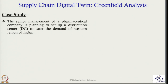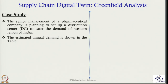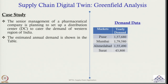The senior management of a pharmaceutical company is planning to set up a distribution center to cater to the demand of the western region of India. The estimated annual demand is shown in the table. We have four markets: Pune (market 1) with annual demand of 1,57,680 units; Mumbai (market 2) with 1,79,580 units; Ahmedabad (market 3) with 1,55,490 units; and Surat (market 4) with 43,800 units.